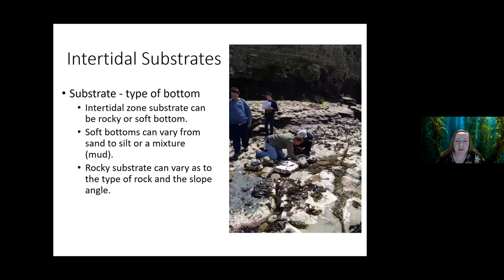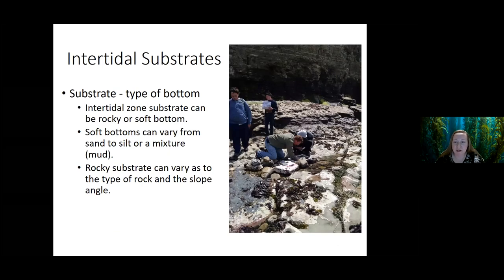Another thing about intertidal zones is that the substrate varies a lot depending mainly on what coast you're on. Substrates can be either rocky or soft. A soft bottom — more sand, silt, muddy mixture — is typically seen more on the east and northeast coast. Rocky substrate is typically what we see on the west coast. In this picture here you can see a really good example of a rocky substrate in an intertidal zone, with some of my marine biology students sampling it.